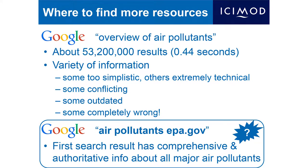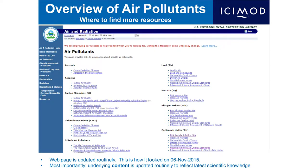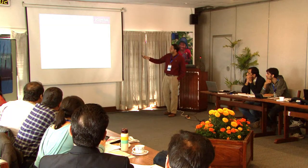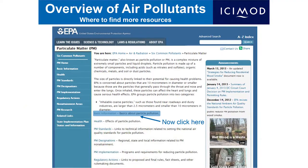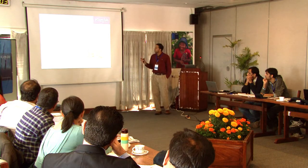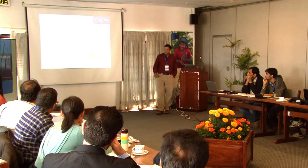If you type 'overview of air pollutants' into Google, you get 53 million results — some too simplistic, some too complex, and a lot of it actually conflicting. The important thing about the recommended webpage is that it's updated routinely and the underlying content constantly reflects the latest scientific knowledge, so you can be assured of getting current information. EPA.gov is a very good resource: the EPA particle pollution site gives basic information about particles, and analogous pages exist for all other air pollutants.